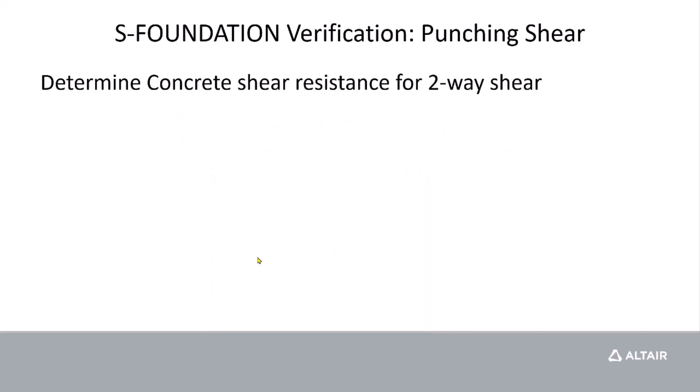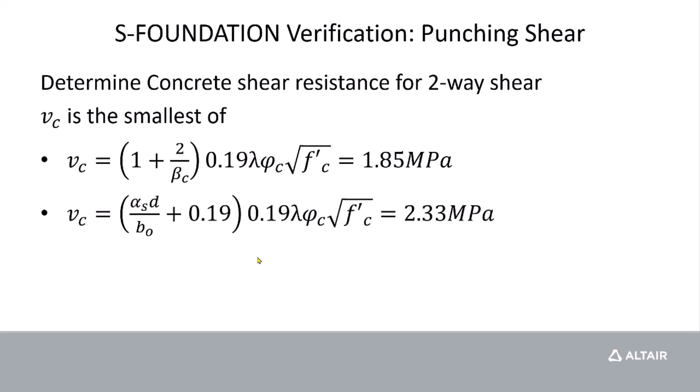So we need to be able to determine the concrete shear resistance, and we can use the information we've calculated in the previous slides to do that. So the concrete shear resistance is the smallest of the following three values. And there's different formulas within the design code to dictate what those values will be. So there's three different criterion that are used, and we take the smallest of the three, which happens to be 1.24 MPa. So that's going to be our concrete shear resistance for two-way shear.